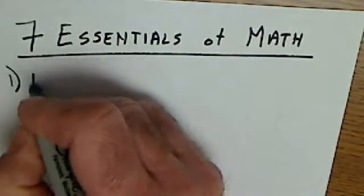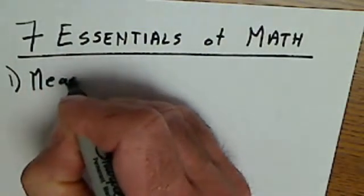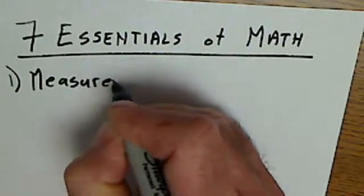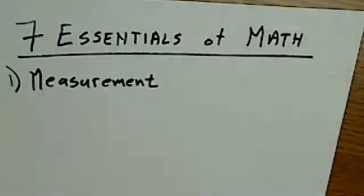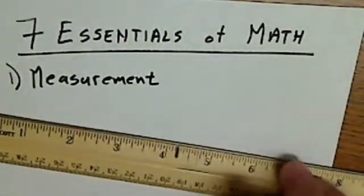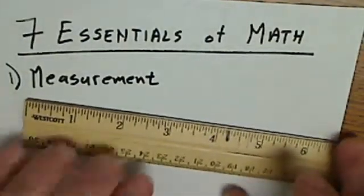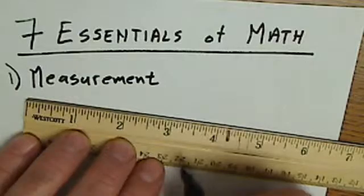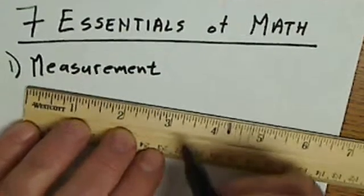Number one is measurement. Measurement's key because you can't design anything or build anything unless you have some sort of units of measurement. Looking at a ruler here, measurement's also a perfect segue to fractions and the rest of the other essentials.